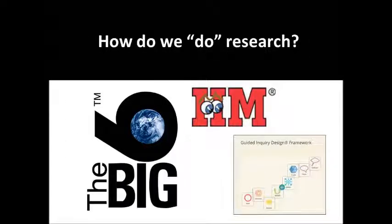So how do we actually do research? There are a couple of methods that you could follow, a couple of approaches. The Big Six is one, the Independent Investigation Method is one, and Guided Inquiry Design is one. These are all just guides to help you through the research process.